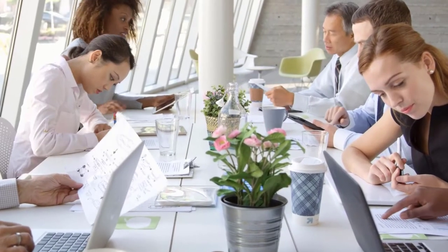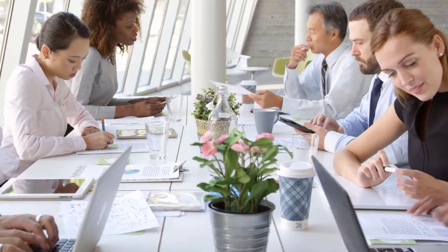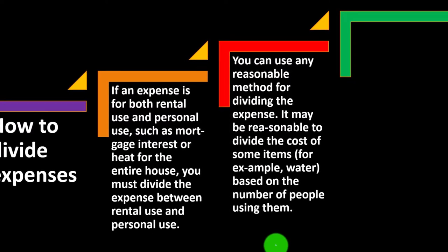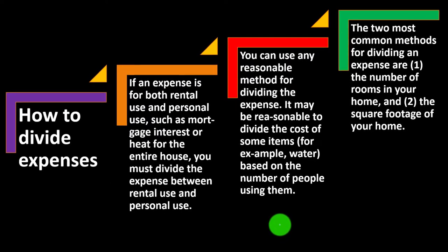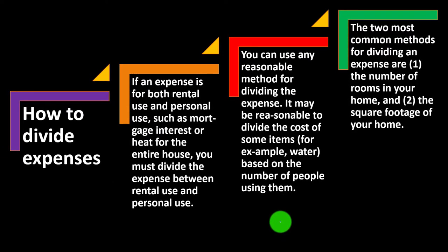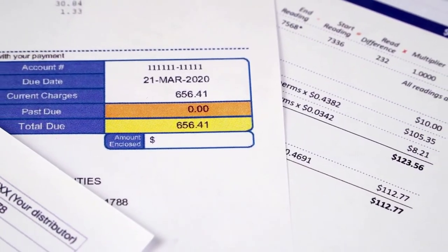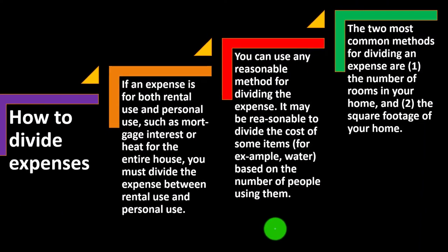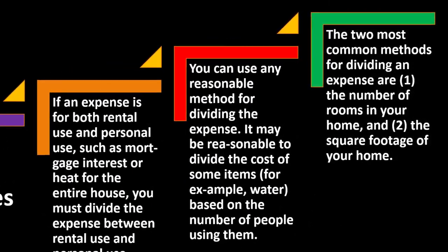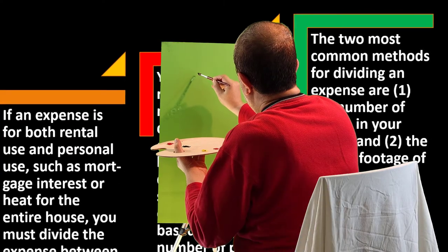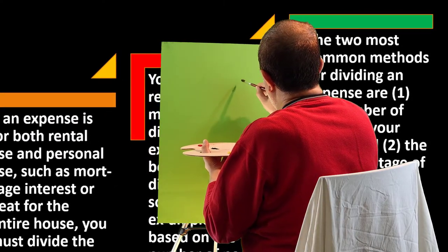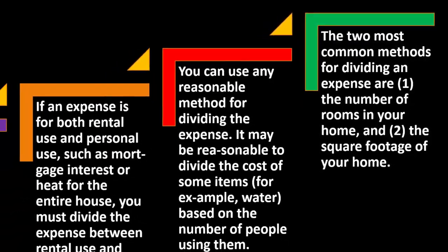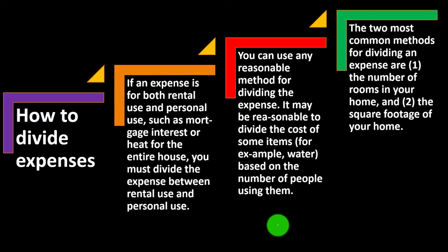It may be reasonable to divide the cost of some items, for example water, based on the number of people using them — that would be a reasonable allocation basis. The two most common methods of dividing an expense are: one, the number of rooms in your home, and two, the square footage of your home. You'd take the square footage of the rental space divided by the square footage of the whole space, and that ratio is what you'd typically use. You could also use the number of people using the water as another method — you'd come up with a different number than if you used square footage.